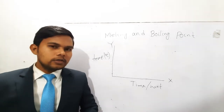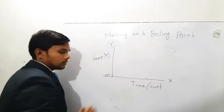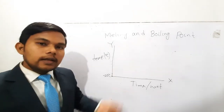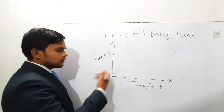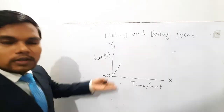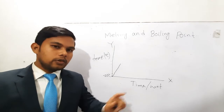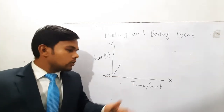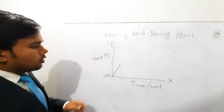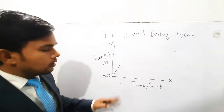Let us take a piece of ice at minus 20 degrees Celsius as our starting point. When we apply heat to the ice, the temperature gradually increases from minus 20, to minus 10, to minus 5. But after a certain time, even though we continue to apply heat without stopping, the temperature stops increasing and remains constant.